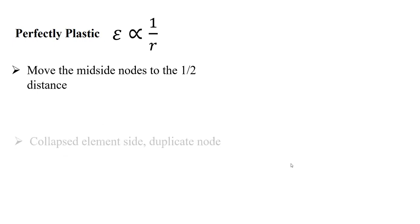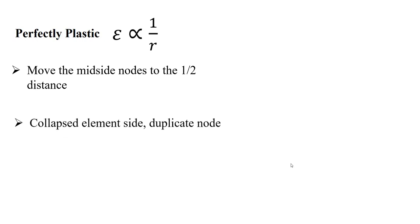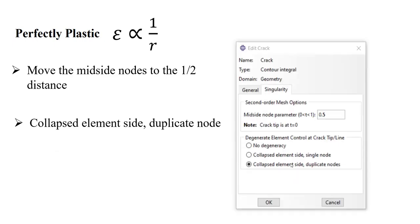For perfectly plastic behavior, we should move the mid-side nodes to the center of the side edges. Also, we collapse element side to duplicate node, and we can do this setting in this window.